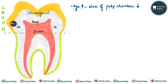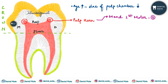With increase in age, the size of the pulp chamber gradually decreases. The pulp horns are extensions of the pulp into the cusps — the number of pulp horns depends on the number of cusps. In the mandibular first molar, five pulp horns are present, whereas in anteriors only a single pulp horn is present.